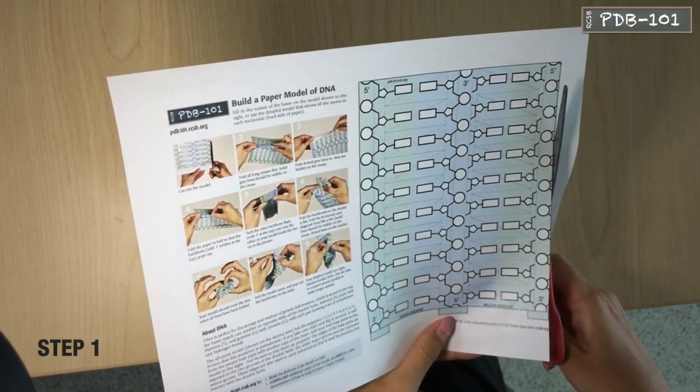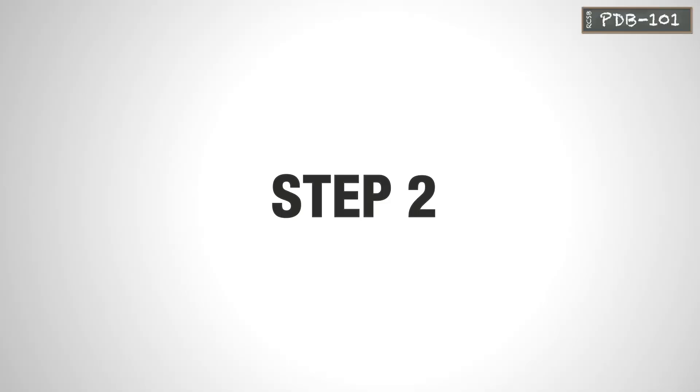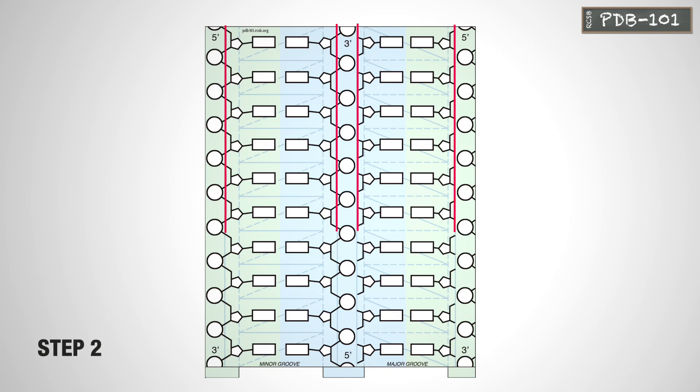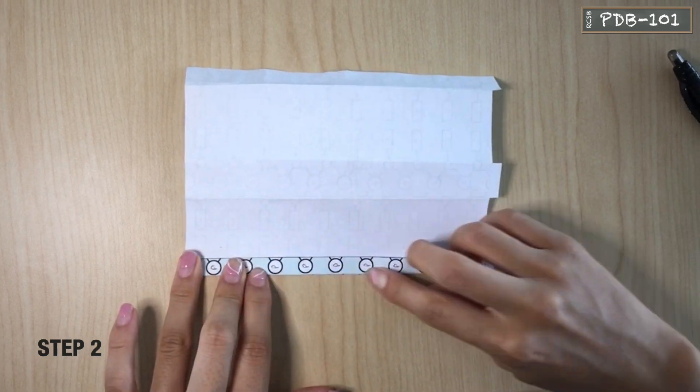First, cut out the model. Fold all long solid gray lines so that each solid line is visible on the top edge of the crease that is made.